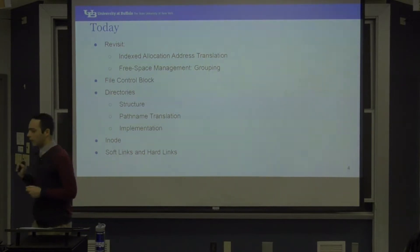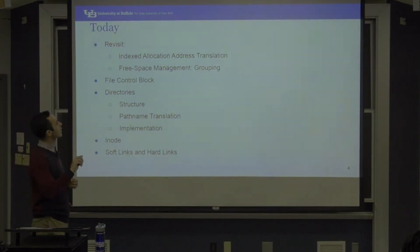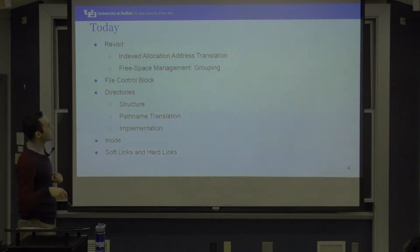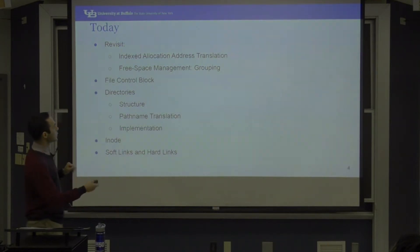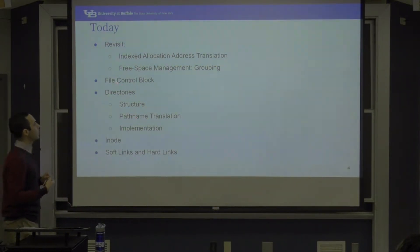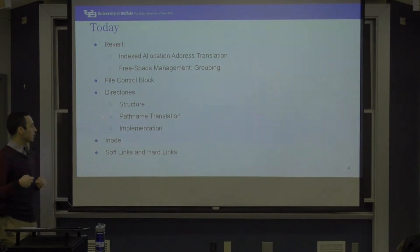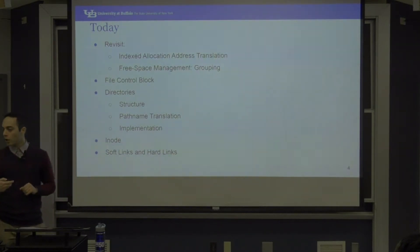Today, first we're going to clear up a bit of confusion from last session about the index allocation address translation — I made a calculation mistake there. We'll also clarify free space management: grouping versus counting. Grouping does not necessarily need to be contiguous. Then we'll go over the file control block, how directories are structured and implemented, and talk about inodes and soft links and hard links in Unix.